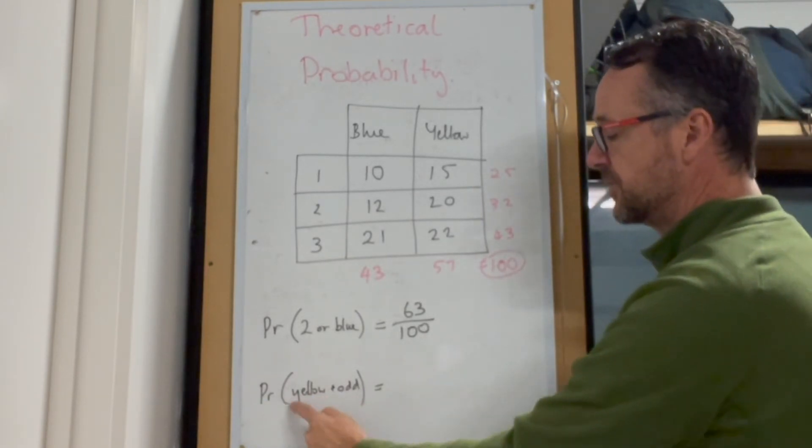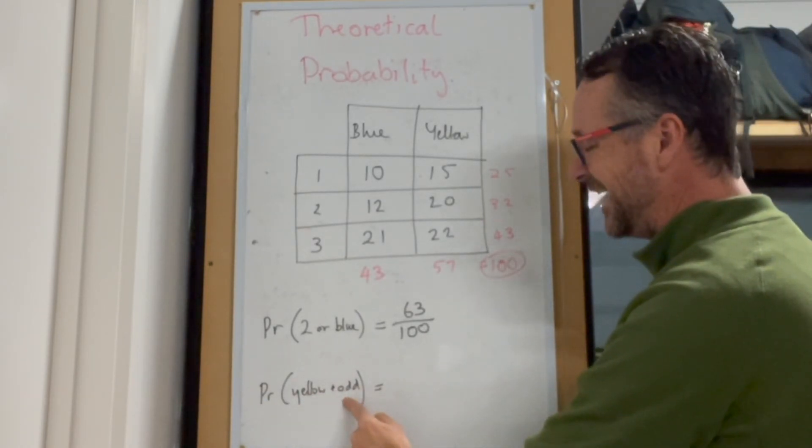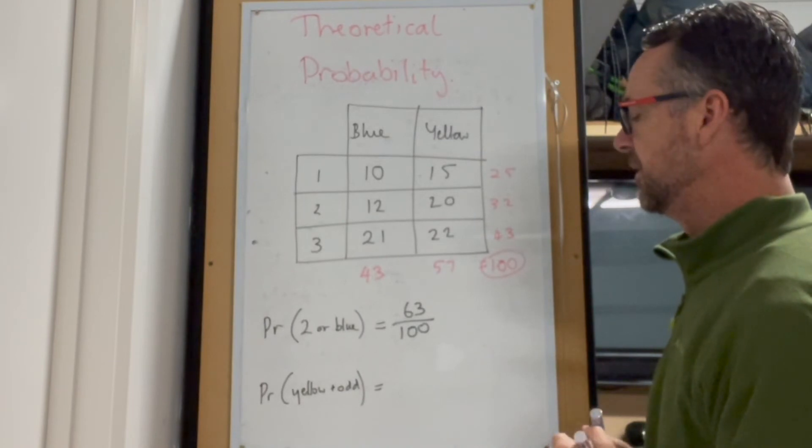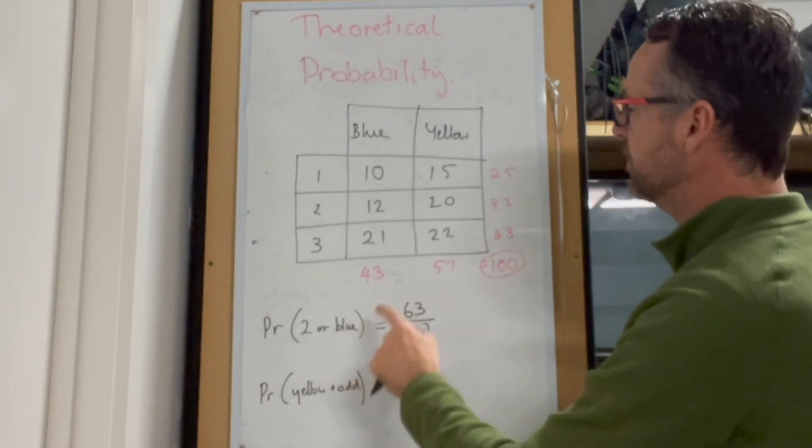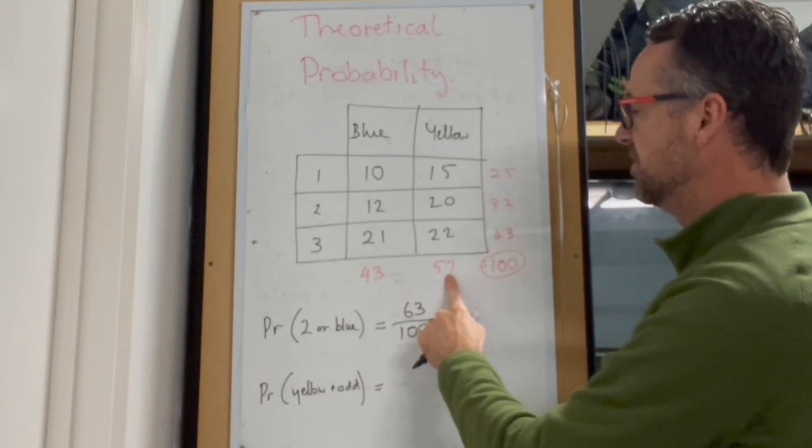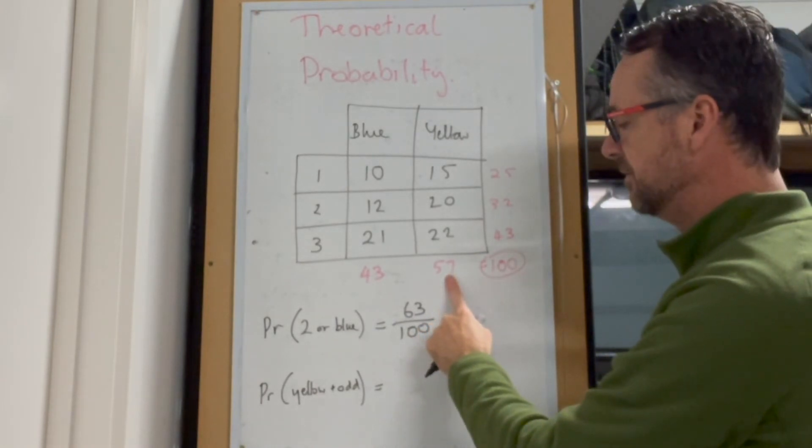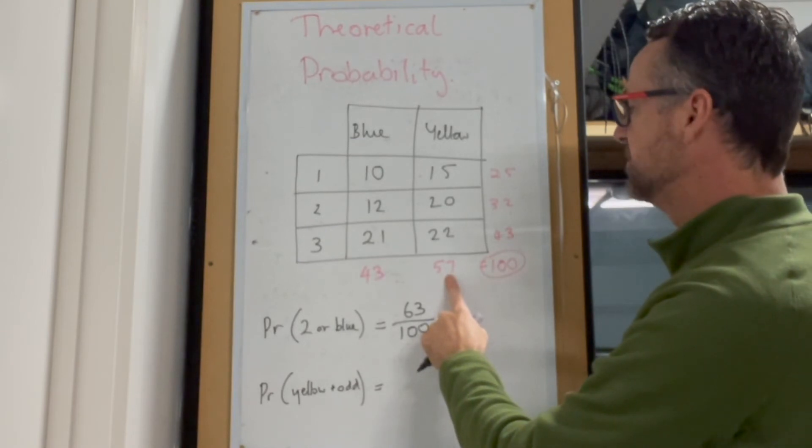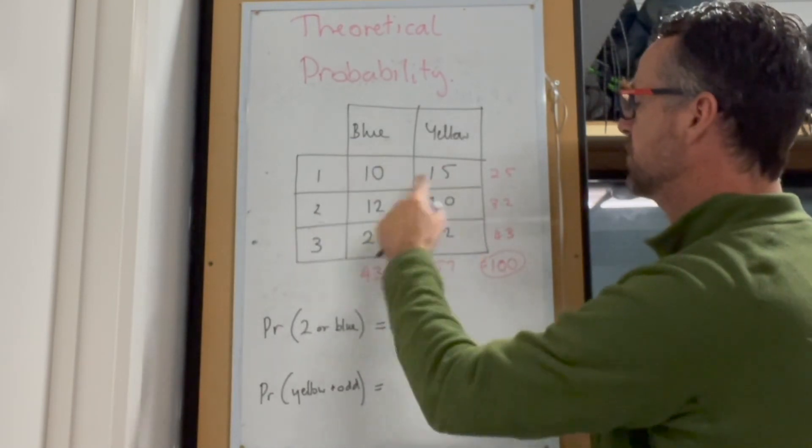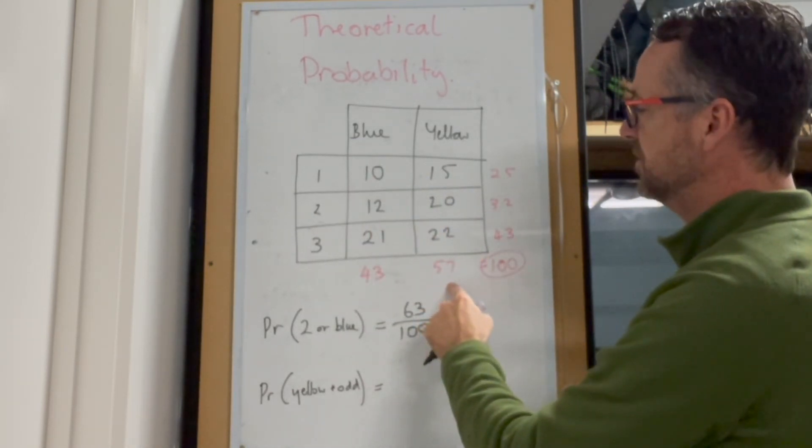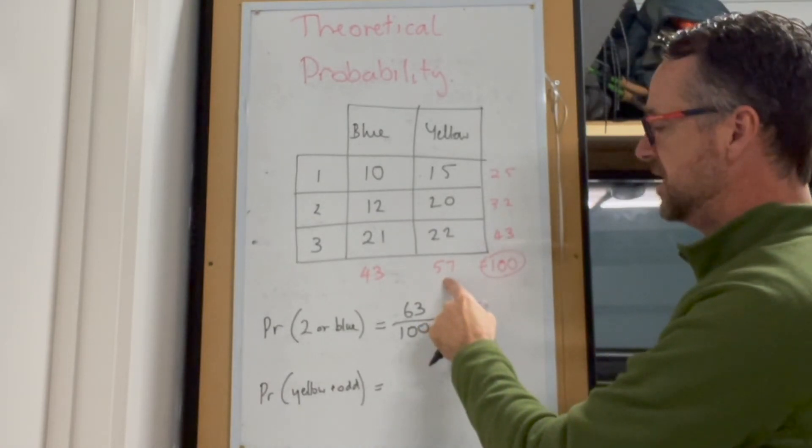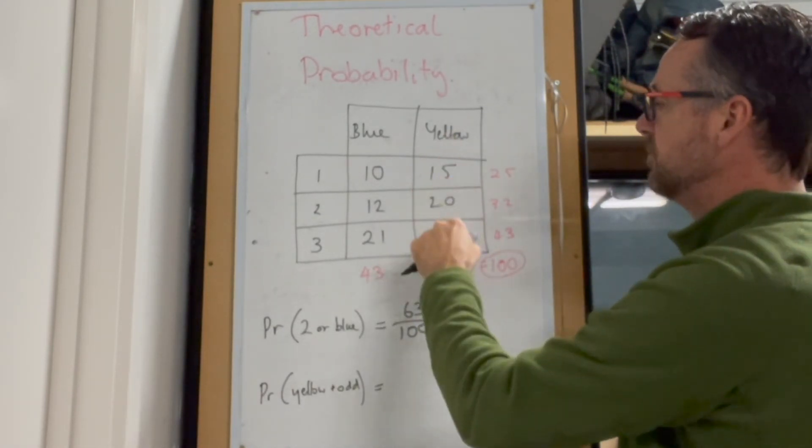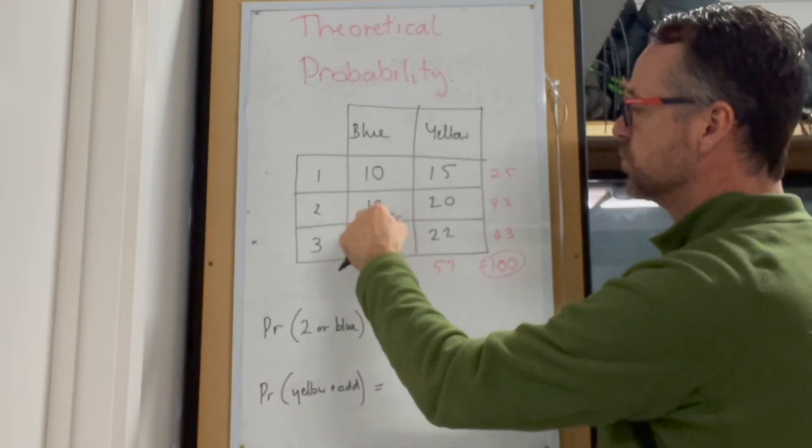Now, the next one looks at this idea. What are the chances of it being yellow and odd? So it's going to be a yellow one. There's 57 of them that are yellow. And in order for it to be odd, it has to be a 1 or a 3. So you can look at this and go, well, what are the chances of it being not yellow, which means blue and even, which is 12.